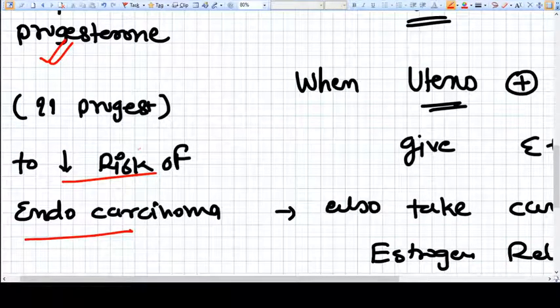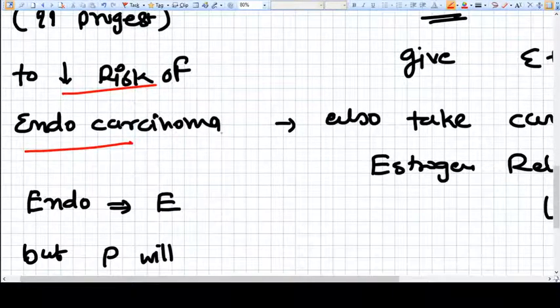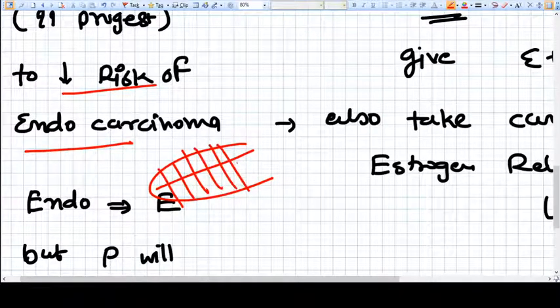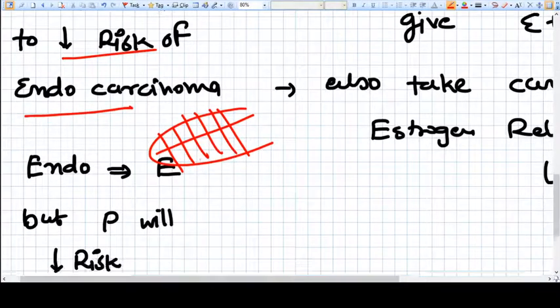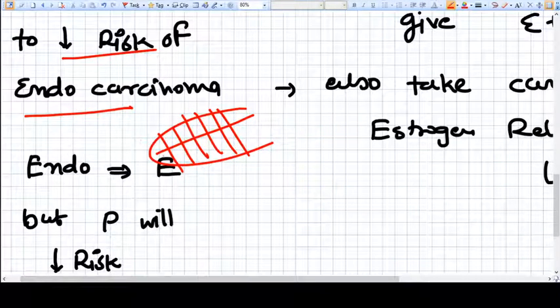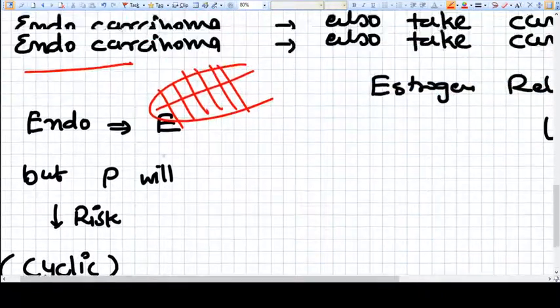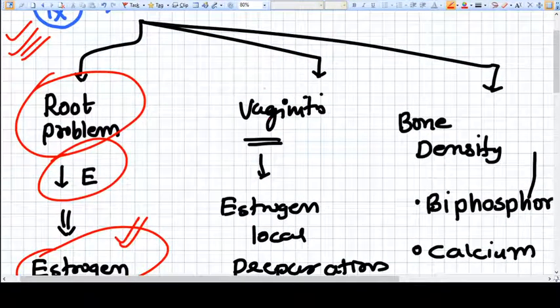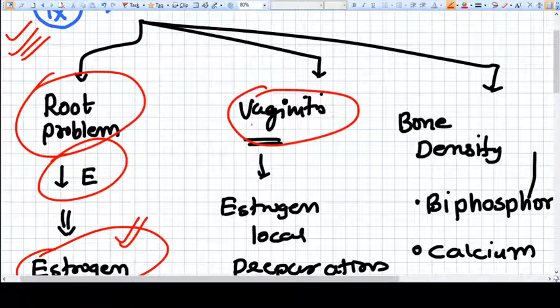If we have a uterus and endometrium, we cannot just give only estrogen because it will develop the endometrium higher and the endometrium will not get washed out without progesterone. So we have to combine estrogen with progesterone. Now we have different symptoms of menopause that we treat separately.